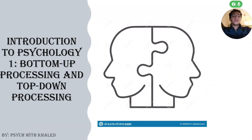This video will be discussing two psychological theories: bottom-up processing and top-down processing. These two theories are psychologists' attempts to explain how we first sense, then process, and lastly analyze the information that we sense around us.